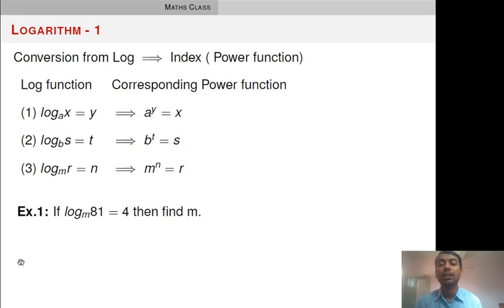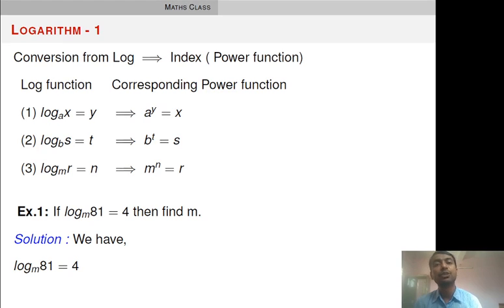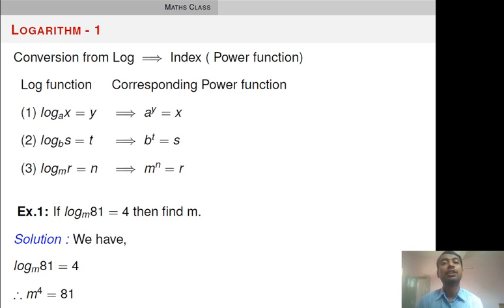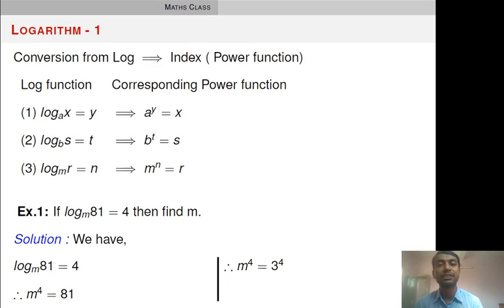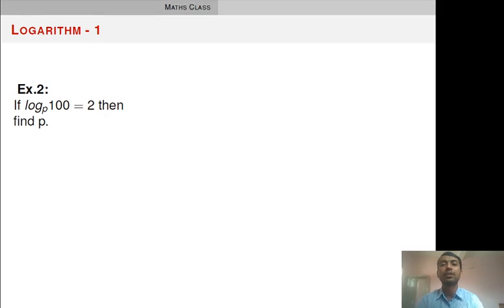Let us see this example: it is given that log 81 base M is equal to 4. We have to find out the value of M. For that, we need to remove the log function, so let us convert this into an index function. We get M raised to 4 is equal to 81. Once the log function is removed, it is easy to find M — we need to find whose fourth power is 81. We know 3 raised to 4 is equal to 81, so M raised to 4 equals 3 raised to 4, and hence M is equal to 3.